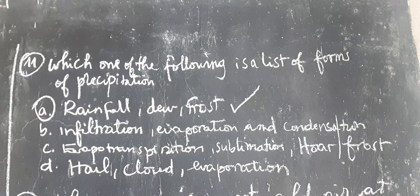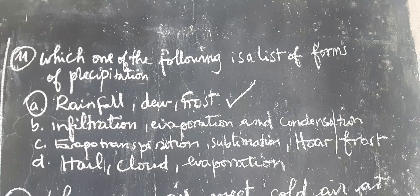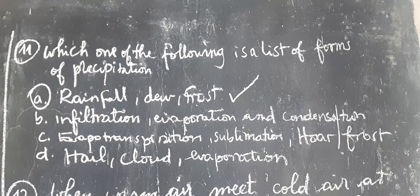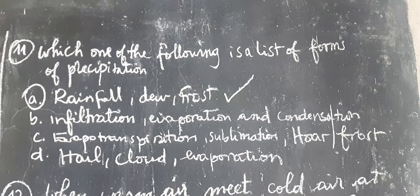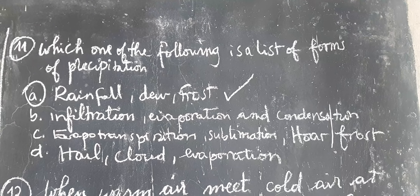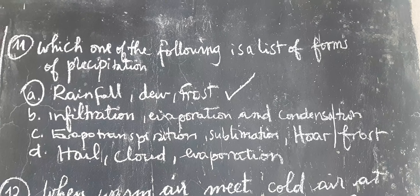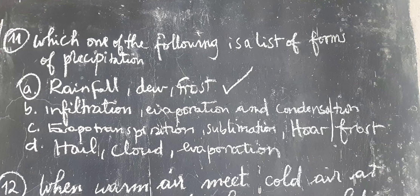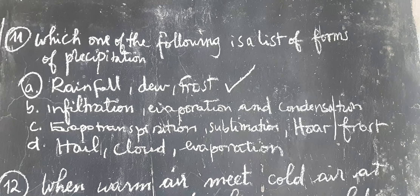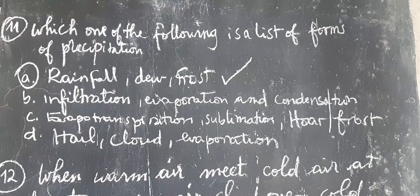Let's go to question number eleven: Which one of the following is a relief, or forms of precipitation? They give us different options, and they want us to choose which one indicates the forms of precipitation. A. Rain, fog, dew, and frost. B. Infiltration, evaporation, and condensation. C. Evapotranspiration, sublimation, and hoarfrost. D. Hail, clouds, and evaporation. The correct answer is A, because rain, fog, dew, and frost are forms of precipitation.